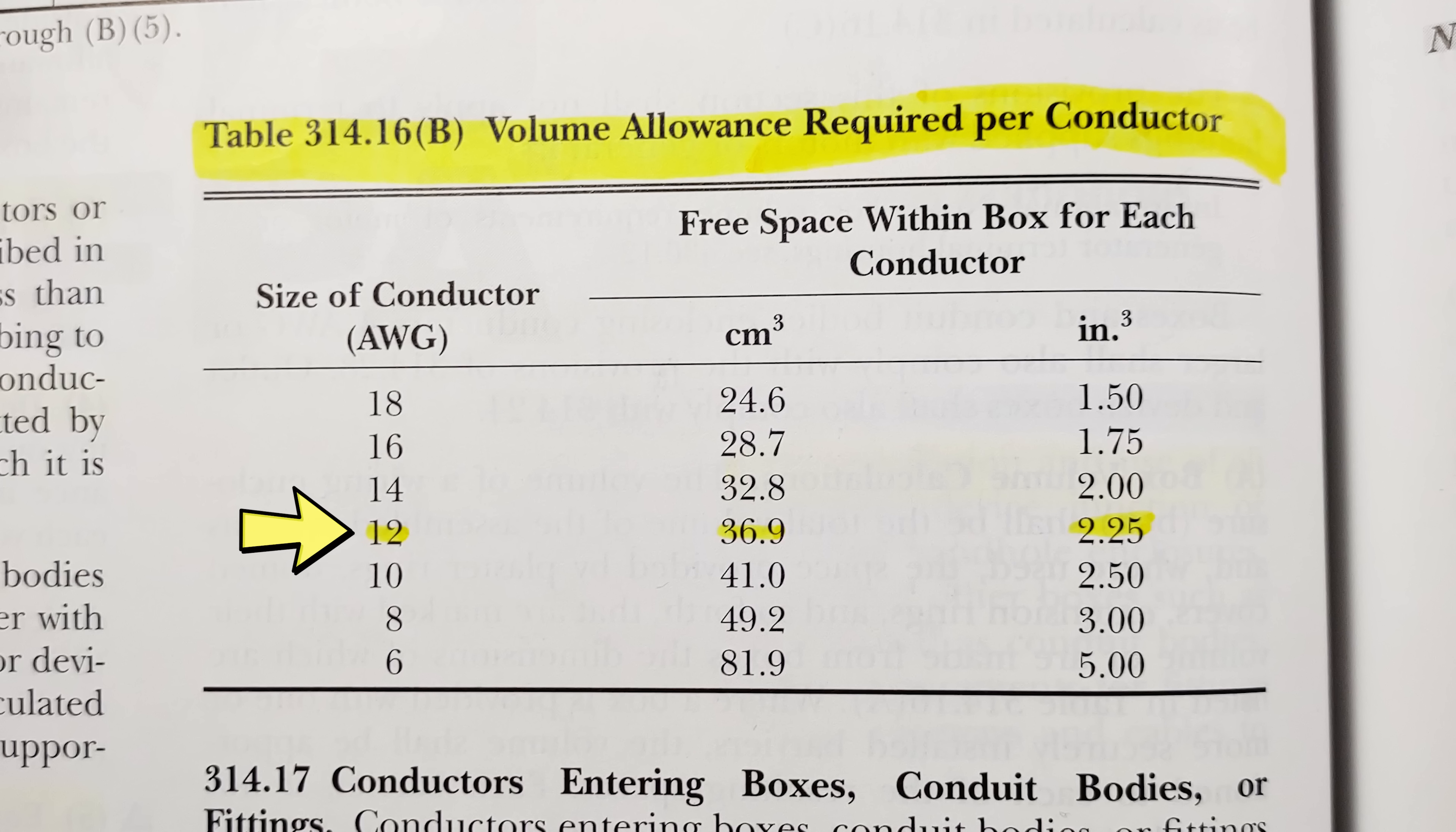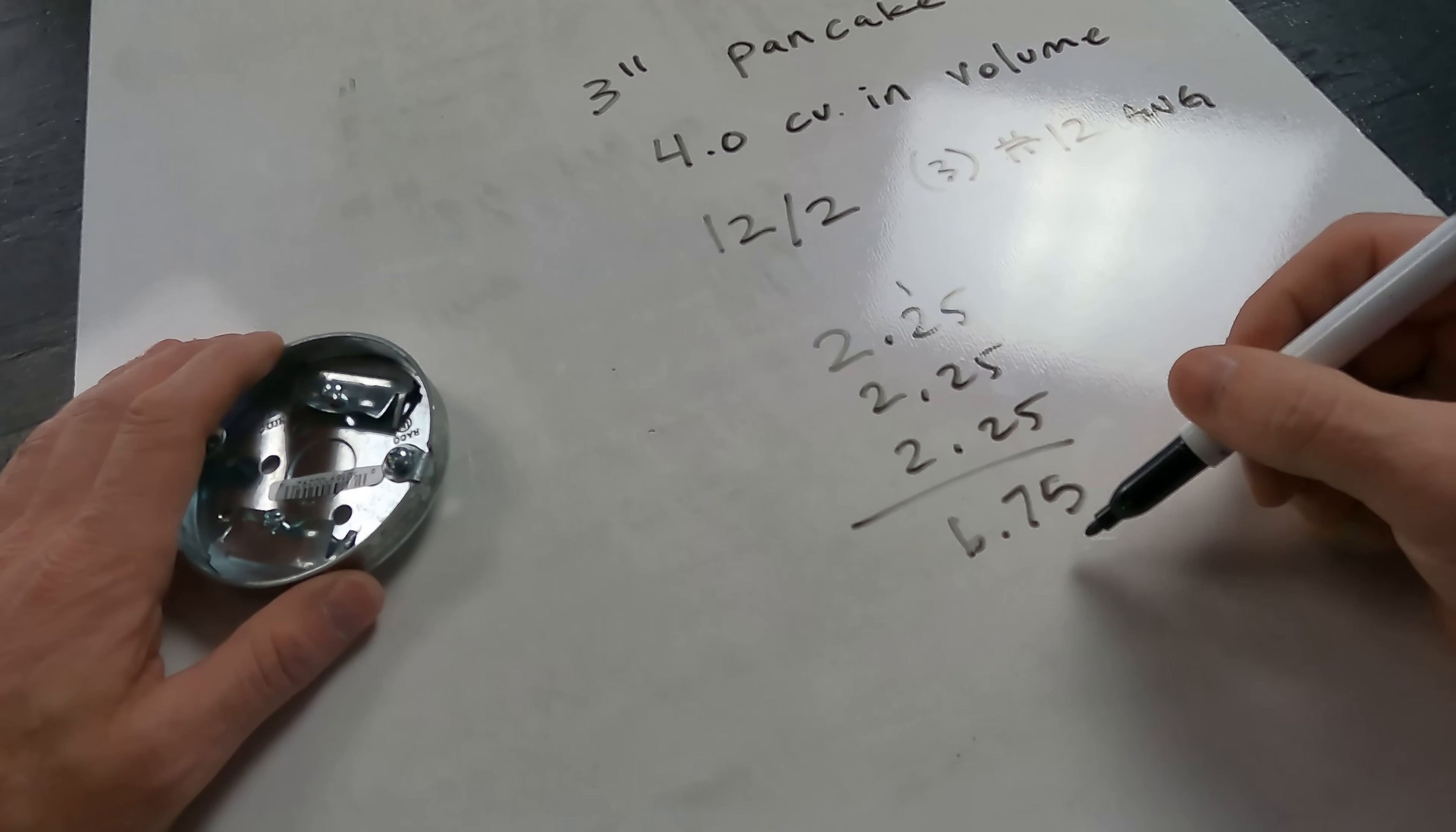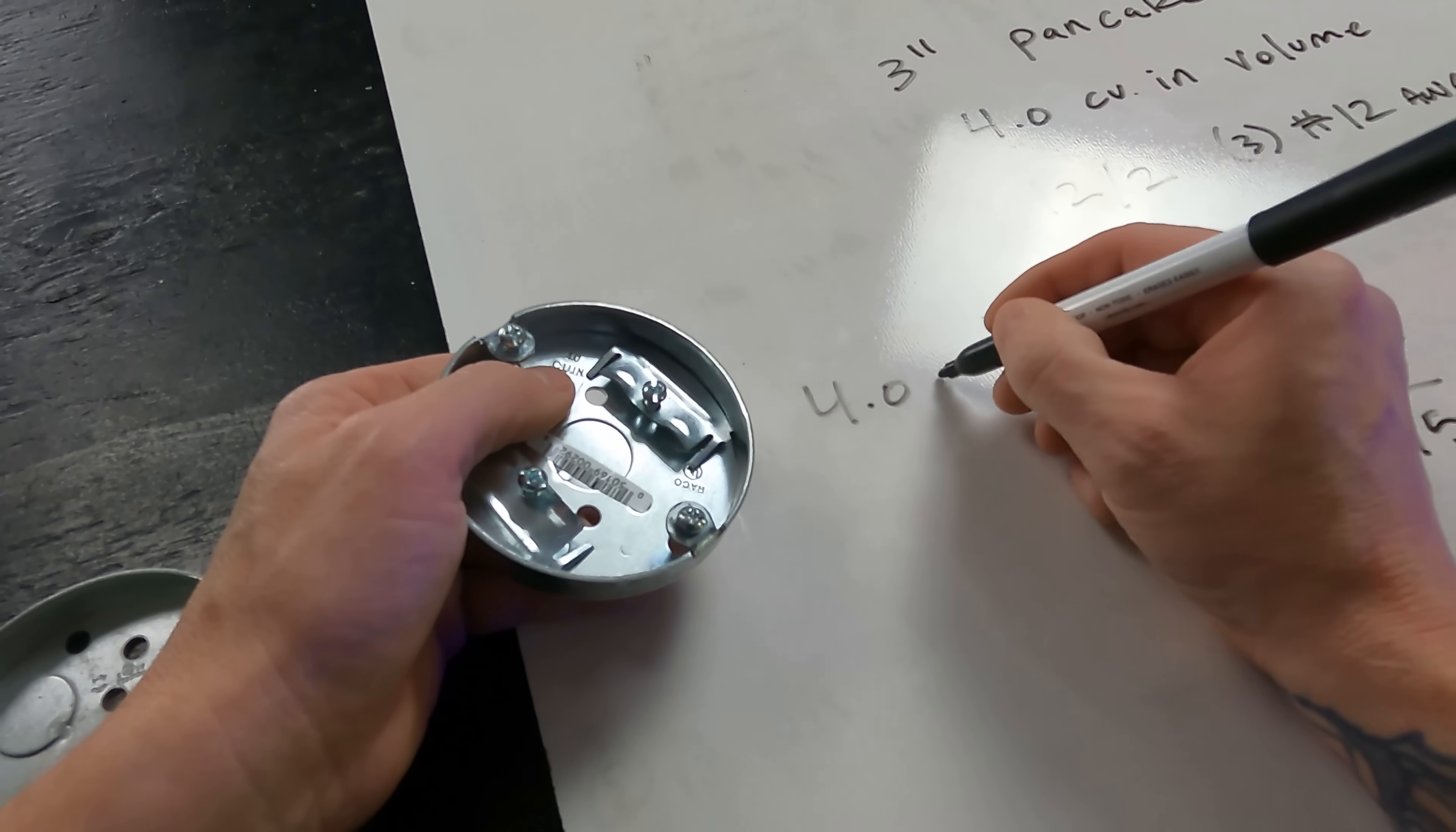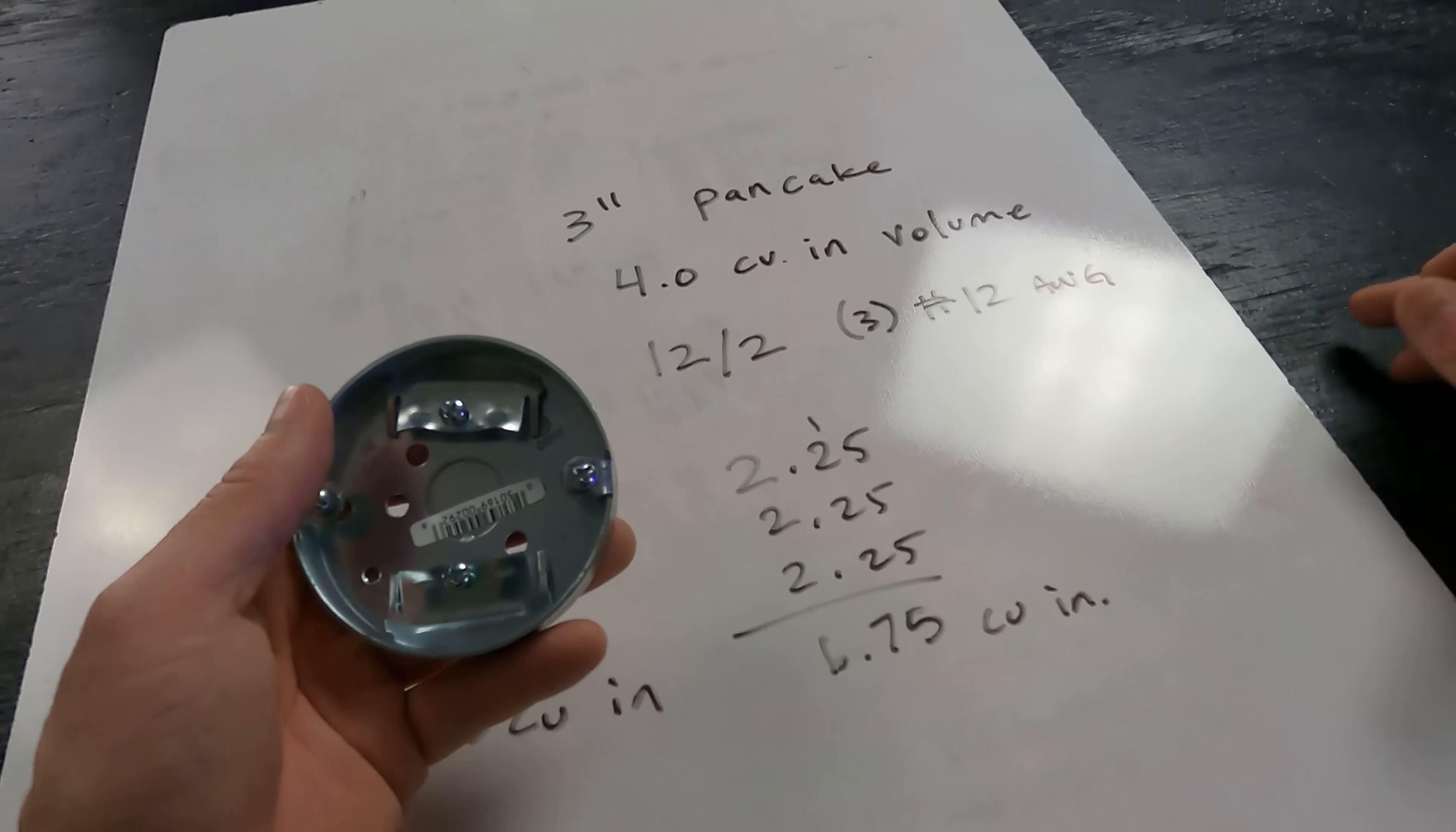Number 12 is two and a quarter per conductor, so that means we've got 2.25 plus 2.25 plus 2.25. That's 6.75 cubic inches worth of conductor that we have coming into this box if we're running 12-2 Romex. So 6.75 cubic inches, but this is four cubic inches. Because we have these clamps we actually have to take it down a volume allowance. This 4.0 cubic inch box minus 2.25 ends up being 1.75 cubic inches. This box is way too small. We can't even per code fit one piece of 12-2 in this box.